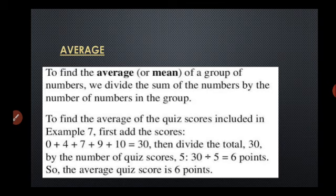To find the average or the mean of a group of numbers, we divide the sum of all the numbers by the number of numbers in the group, or we can say sum of all the observations divided by number of observations.